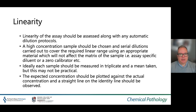Linearity of the assay should be assessed along with any automatic diluting protocols. A high concentration sample should be chosen and serial dilution carried out to cover the required linear range, using an appropriate material which will not affect the matrix of the sample — for example, an assay-specific diluent or a zero calibrator. Ideally each sample should be measured in triplicate and a mean taken. The expected concentration should be plotted against the actual concentration, and a straight line on the identity line should be observed. If not, an explanation should be sought.